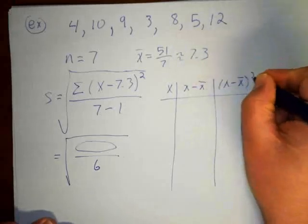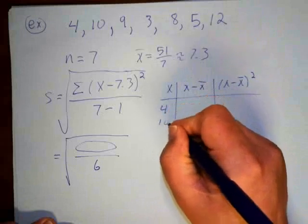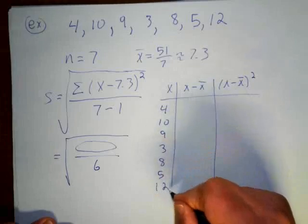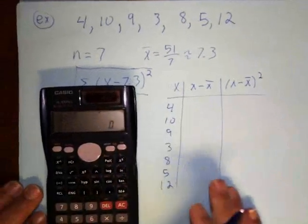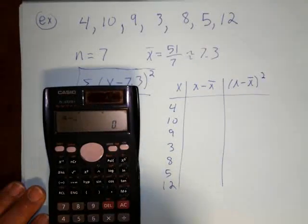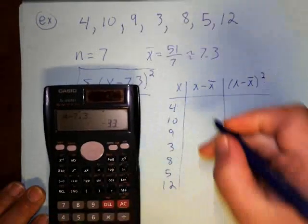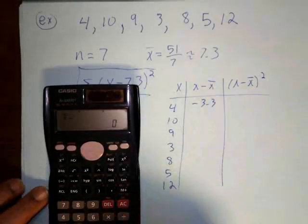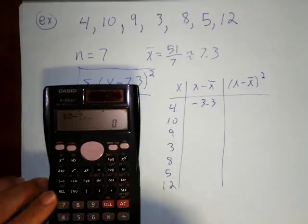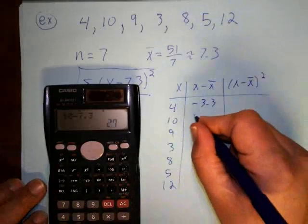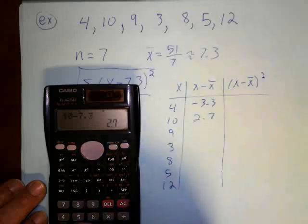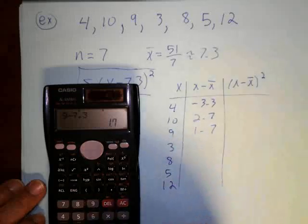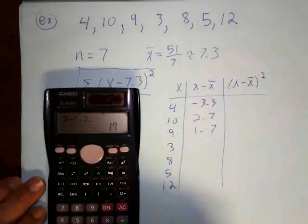So now let's set up my table. These are the values: 4, 10, 9, 3, 8, 5, and 12. Maybe I'll have my calculator handy here. 4 minus 7.3 is negative 3.3, 10 minus 7.3 is 2.7, and then my 9 minus 7.3 is 1.7.